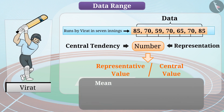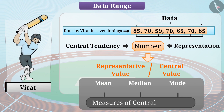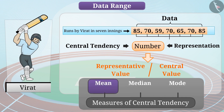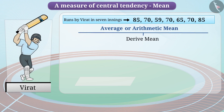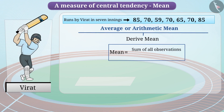The mean, median and mode are measures of central tendency, but their suitability and applicability depends on the requirement. In this video, we will focus on the suitability and purpose of mean. In general terms, mean is referred to as average, also known as arithmetic mean. To derive mean, you need to divide the sum of all observations by the number of observations.